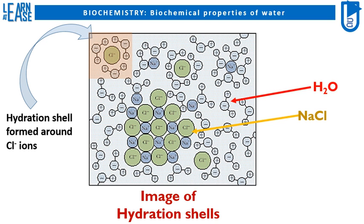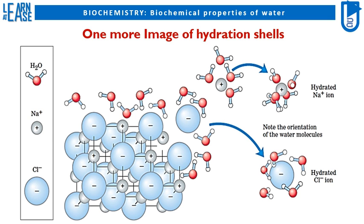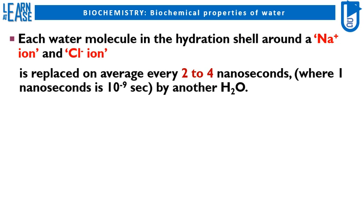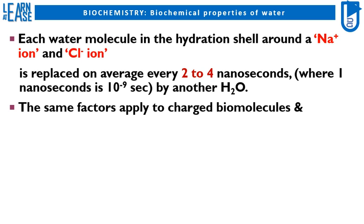Here one more image of hydration shells is shown. This image is taken from the reference book Lehninger's Principles of Biochemistry, 5th edition, whereas the previous image was taken from Biochemistry by Garrett and Grisham, 5th edition. Each water molecule in the hydration shell around Na ion and Cl ion is replaced on average every 2 to 4 nanoseconds by another H2O, where 1 nanosecond is 10 raised to minus 9 seconds.